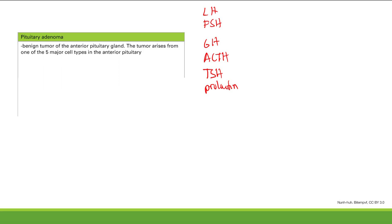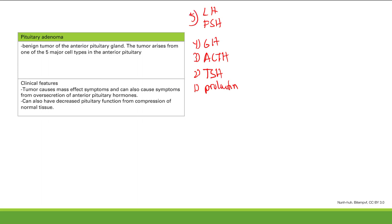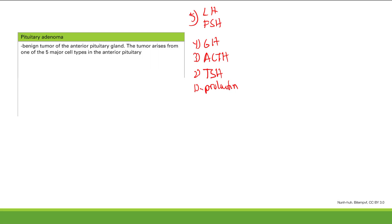There are five different cells you want to be aware of. Lactotrophs make prolactin, thyrotrophs make TSH, corticotrophs make ACTH, somatotrophs make GH, and finally gonadotrophs make LH and FSH — that's five cell types. You don't even have to memorize that because they all pretty much make sense.